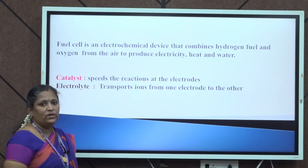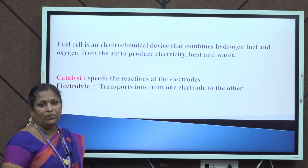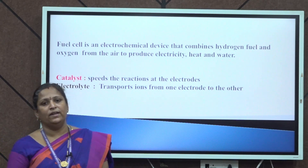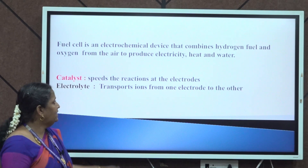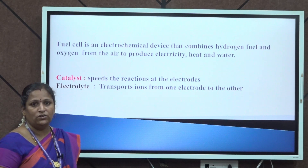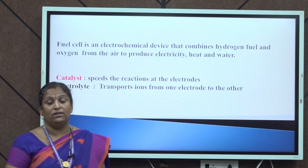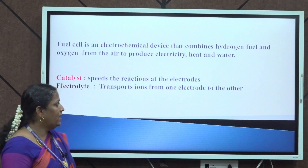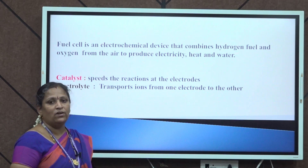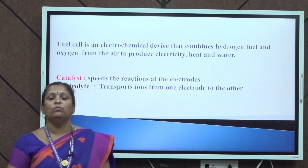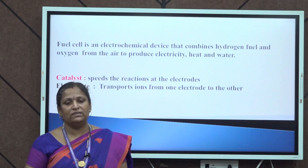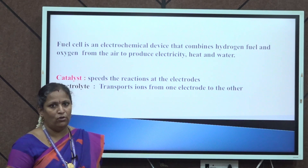The 2 important components of the fuel cell are: one is the catalytic layer, which speeds up the rate of the electrochemical reaction; and second, we have the electrolyte, whose role is to allow only ions to pass through and block the electron flow.